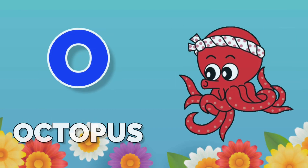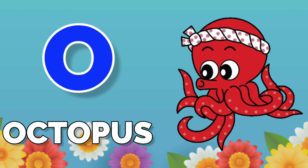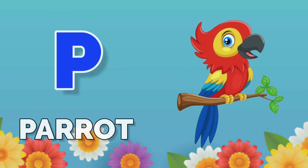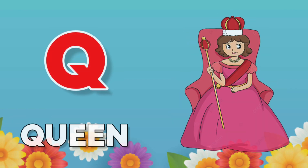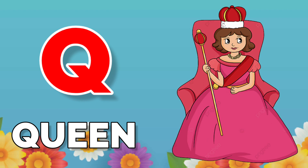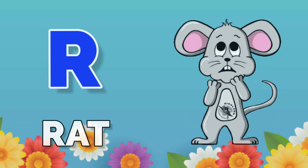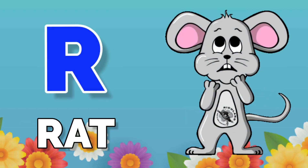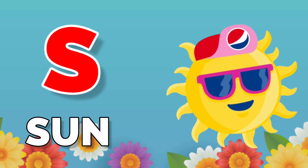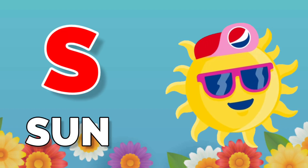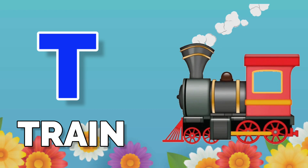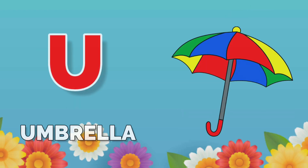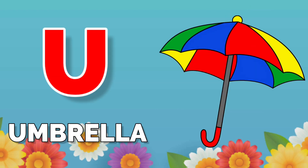O for octopus, B for parrot, U for queen, R for red, S for person, E for friend.